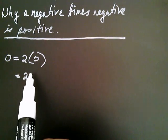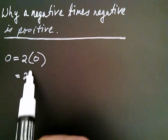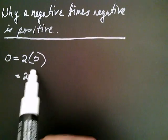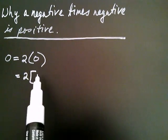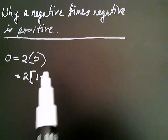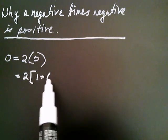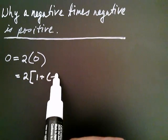You'll see why we're going to do this in a second. So that zero I'm just going to write as one plus negative one.